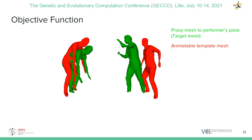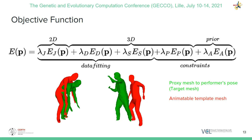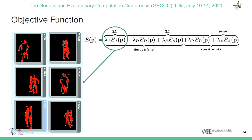At each frame, a proxy to the pose of the performer is generated by 3D reconstructing the performer's point cloud data to a 3D Mesh, called target mesh. Our objective function measures the distance between the template mesh at an arbitrary pose and the target mesh.